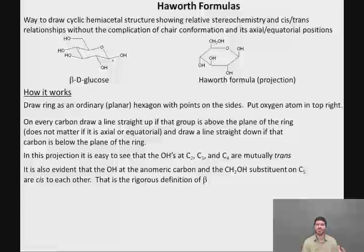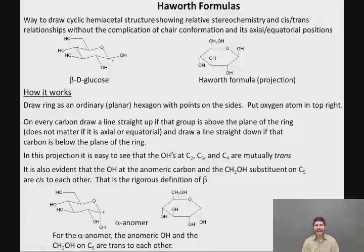So you remember in the last lesson, we said that beta, it's occupying the equatorial position and alpha, it's occupying the axial position. The rigorous definition is that the OH on the anomeric carbon is cis to the carbon substituent on carbon five. And then, if we look at the alpha anomer and look at its Haworth formula, everything is exactly the same except for the anomeric carbon.